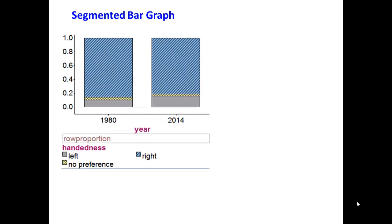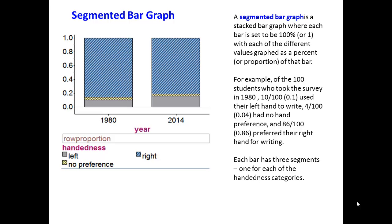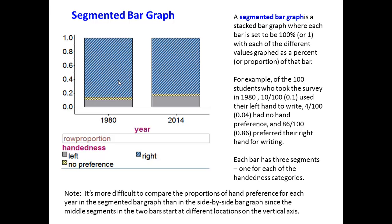Another graphical display for the relationship between two categorical variables is a segmented bar graph. A segmented bar graph is a stacked bar graph where each bar is 100%, with each of the different values graphed as a percent of that bar. For example, of the 100 students surveyed in 1980, 10 out of 100 (0.10) used their left hand, 4 out of 100 (0.04) had no hand preference, and 86 out of 100 (0.86) preferred to write with their right hand. Note it is more difficult to compare the proportions of hand preference for each year in the segmented bar graph than in the side-by-side bar graph, since the middle segments start at different locations on the vertical axis.